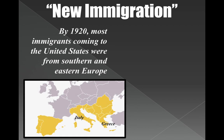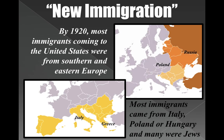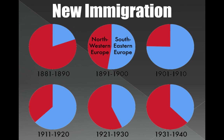By the 1920s, most of the immigrants were actually coming from Southern and Eastern Europe — from Italy, Poland, or Hungary — and many of them were Jews. We're going to talk a lot about Judaism when we discuss World War II, but those people coming to the United States now will help them later when Hitler takes over. This chart shows Northern and Western Europeans coming early, then it shifts to more Southern and Eastern Europeans coming later, balancing out by World War II.